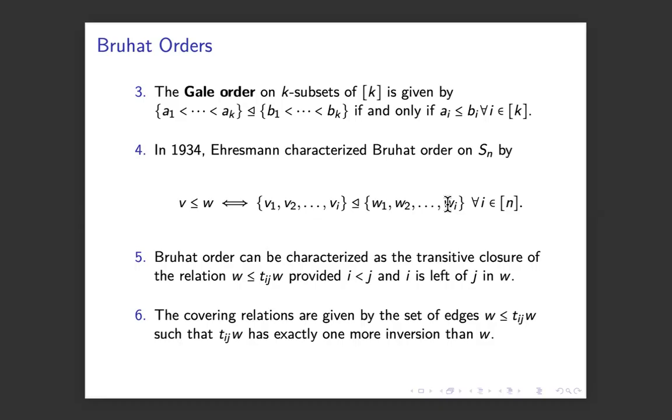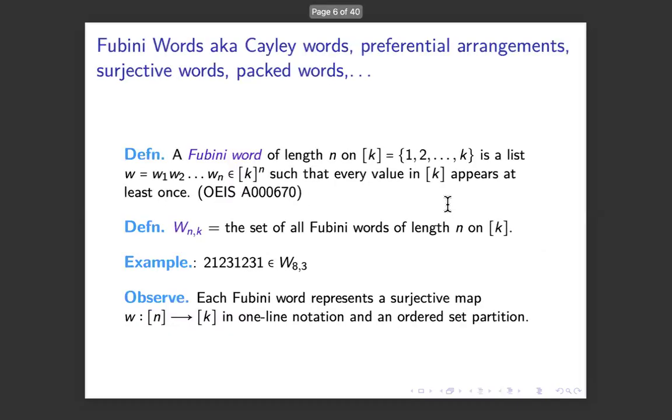Was that the minimal number of relations I needed to define this partial order or could I get by with fewer of them? What people call the transitive reduction is the minimal number of relations that you need. Those are the covering relations of a poset. W is less than T_ij W will be a covering relationship if and only if when you apply that transposition switching i and j, you only increase the number of inversions by exactly one. So this will be a ranked poset. The rank function will be exactly the number of inversions.